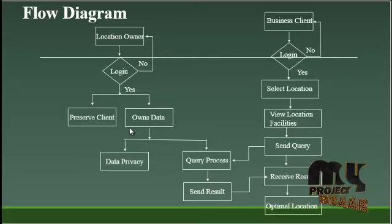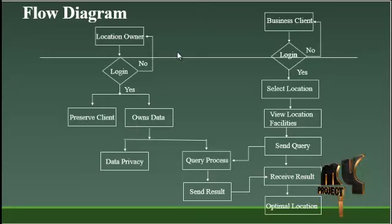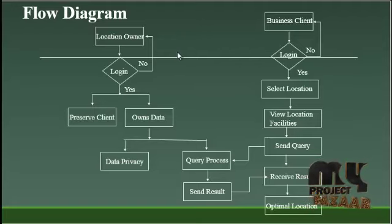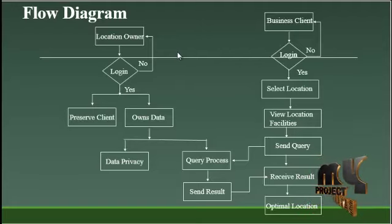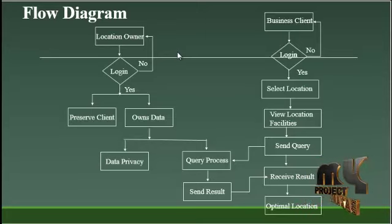There are two roles in our process: the Location Owner and the Business Client. The Location Owner is a person who owns data based on the locations from different users across different locations. There is a separate authentication for the location owner, and after login, the location owner has three different processes.